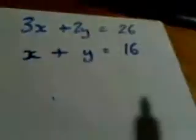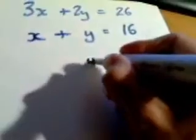So we've got two equations: 3x plus 2y equals 26 and x plus y equals 16. Now what I'm going to do is rearrange the second equation because from that we can see that y will equal 16 take away x. Basically I've taken away x from each side to end up with an equation y equals 16 minus x.